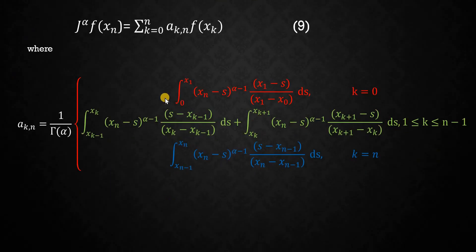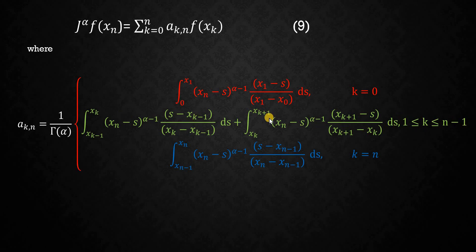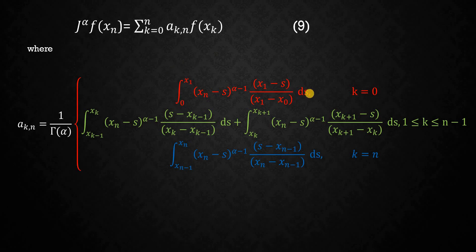Equation 8 is written in compact form as equation 9: when k=0 the red-color term is separated; when k=n the blue-color last term is written; and for intermediate values k=1 to n−1, those terms are written as a sum of two integrals. Expanding equation 9 returns you to equation 8.